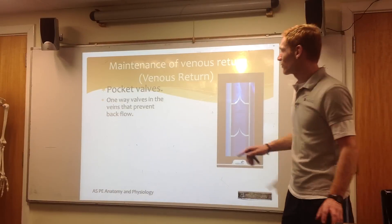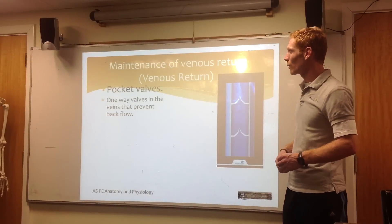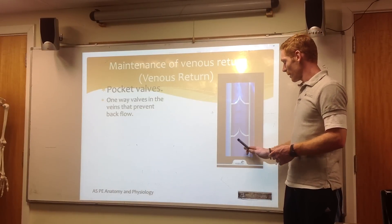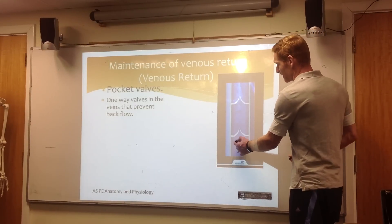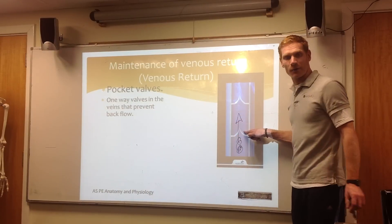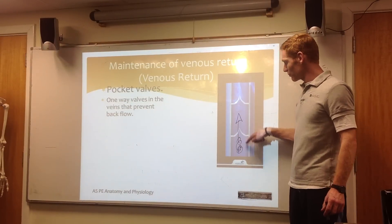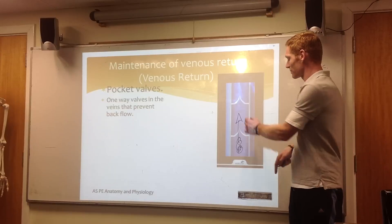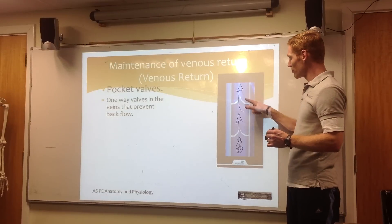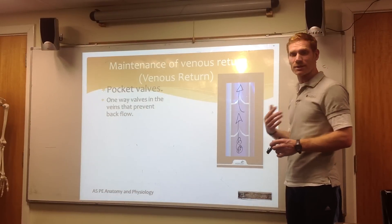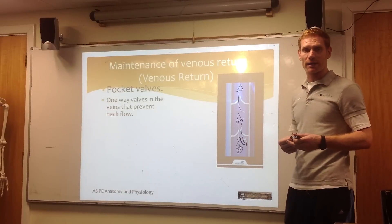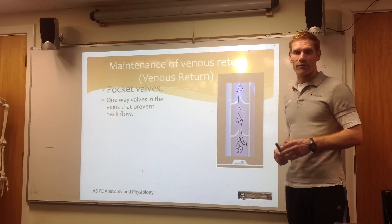First of all, we have our pocket valves, which are one-way valves in the veins that prevent backflow. As the blood is forced up into this stage, the pocket valves stop it from returning back down. So therefore we can work against gravity. These are really, really important — if we don't have these, we'll end up with blood pooling and a poor venous return.